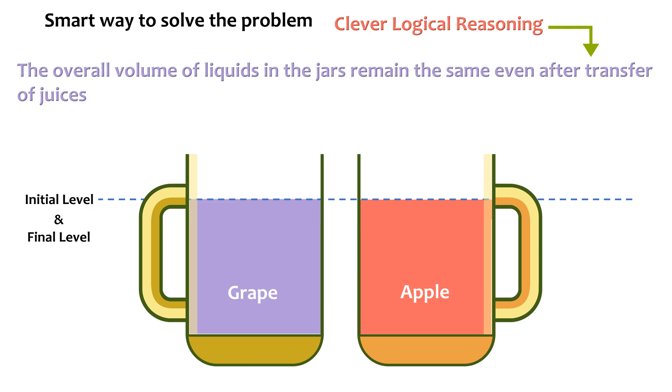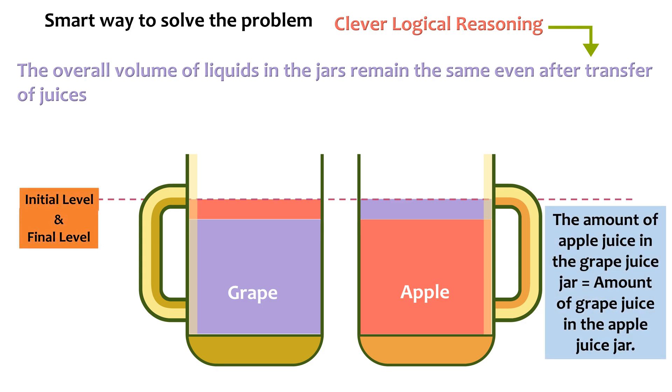It means the volume created due to moving of the grape juice from the grape juice jar must have been filled by apple juice. So, the same amount of apple juice must have been extracted from the apple juice jar, the space emptied by which must have been filled by the grape juice to the initial mark so that their final volumes remain the same. This is to say, there is as much apple juice in the grape juice jar as much grape juice in the apple juice jar.